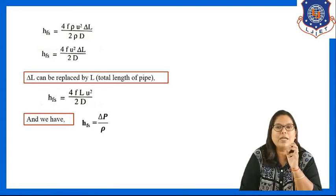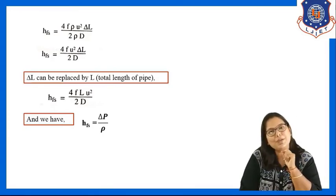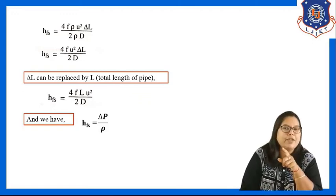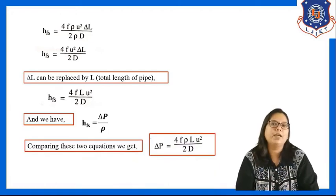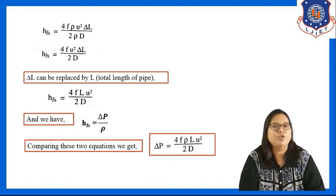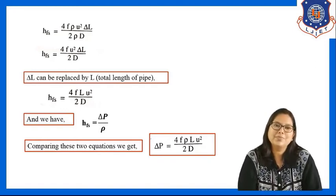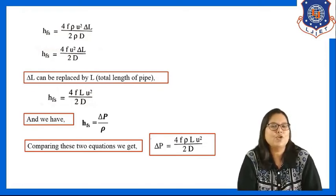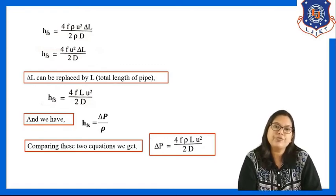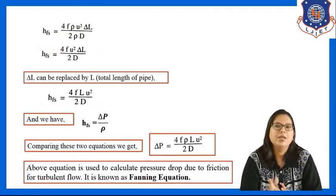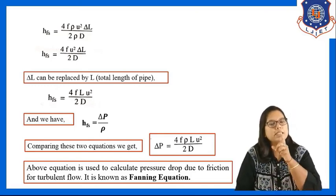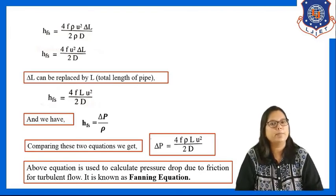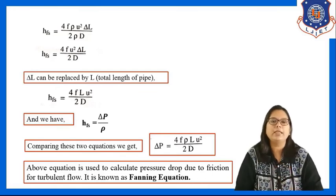Since Hfs = delta P / rho, substituting gives delta P = 4f * rho * l * u² / (2d). This is known as the fanning equation, and it is used to calculate the pressure drop due to friction for turbulent flow.